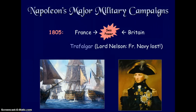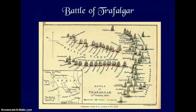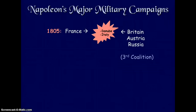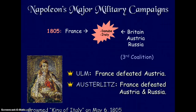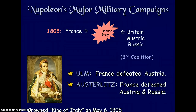In Napoleon's major military campaigns, in 1805 France fought Britain at sea and the French Navy lost — the English were famous for their naval strength as an island nation. In the Third Coalition, France fought Britain, Austria, and Russia in the Danube and in Italy. France defeated Austria at Ulm and defeated Austria and Russia at Austerlitz. Napoleon was crowned King of Italy on May 6, 1805, and crossed the Alps that same year.